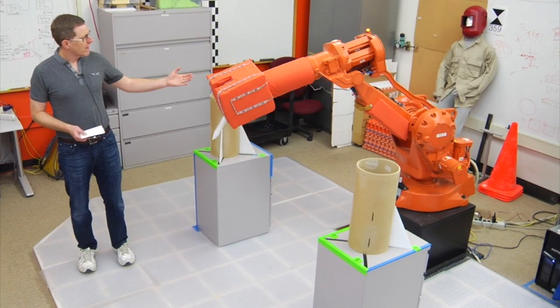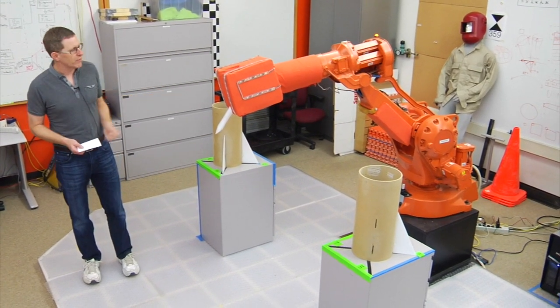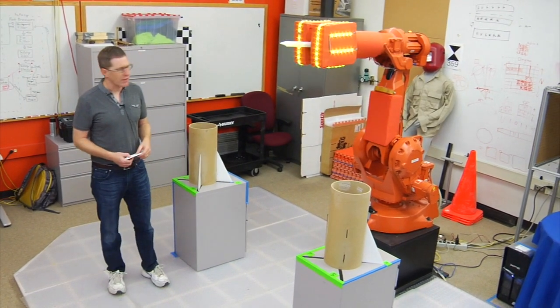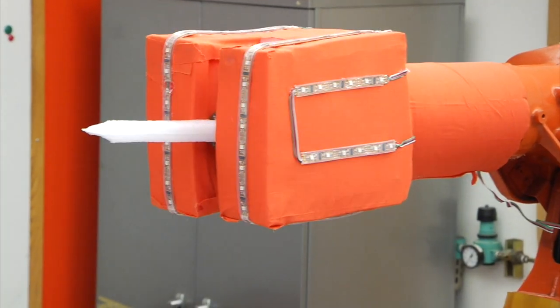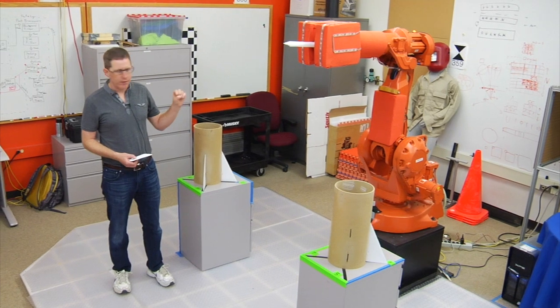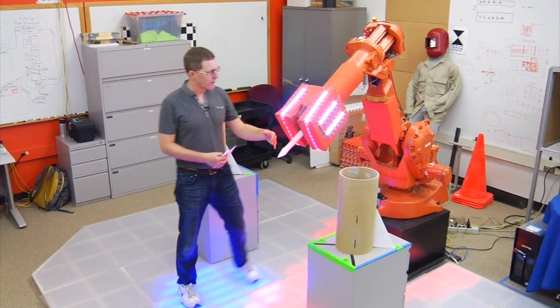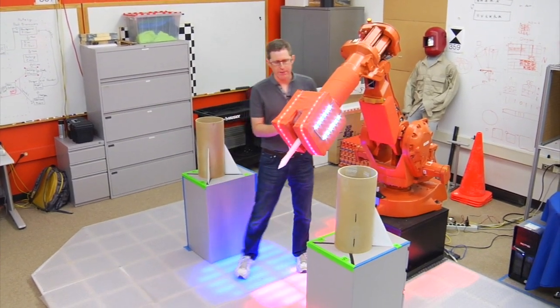The robot can actually communicate what it's trying to do to me. Green indicates the direction the robot is going to be going in. Yellow and flashing is like a pause state. If I get too close to the robot, it shows red, and it shows red only in the direction where the problem is.